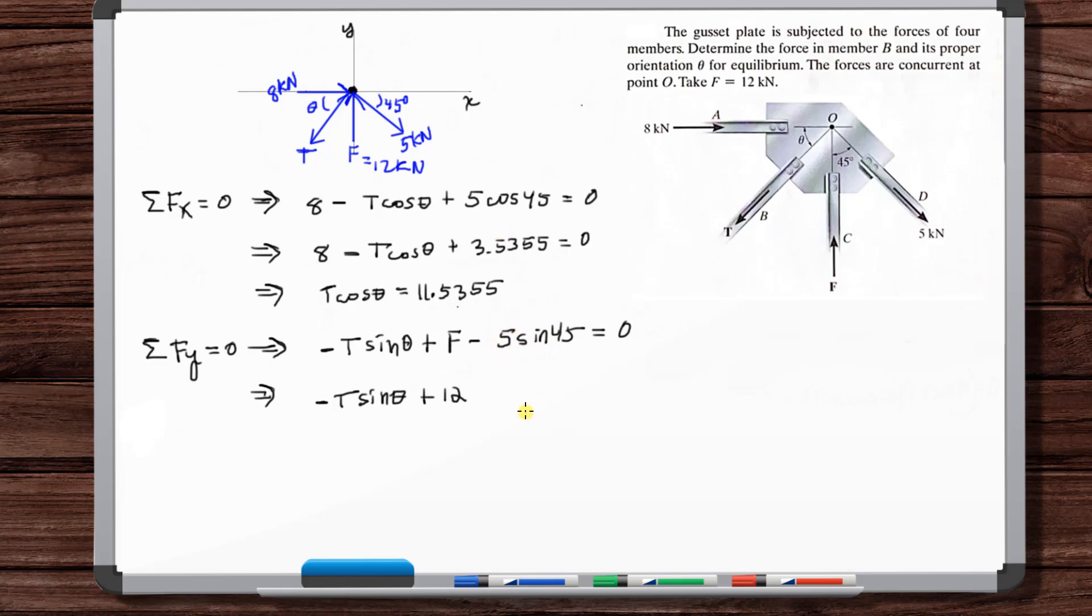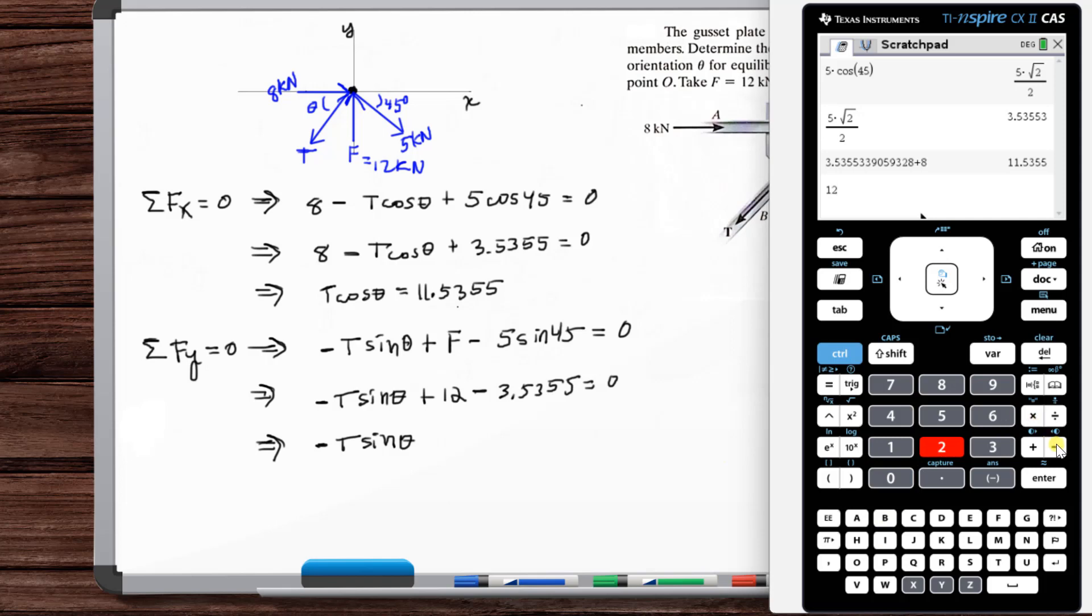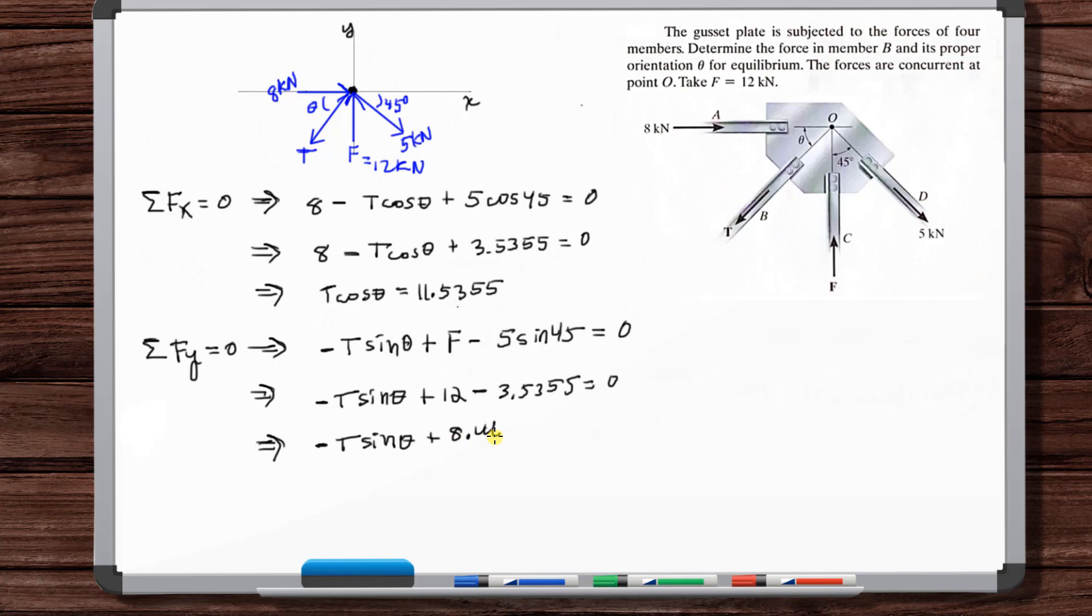So we've got minus T sine theta plus 12, and then cosine of 45 and sine of 45 is the same. So we can just copy this 3.5355, so minus 3.5355 is equal to zero. So minus T sine theta plus 8.4645 is equal to zero.